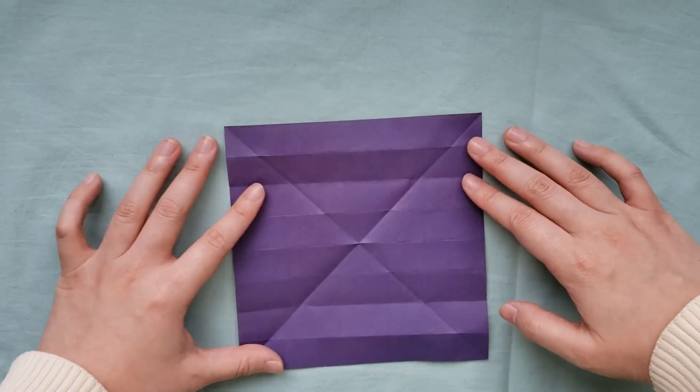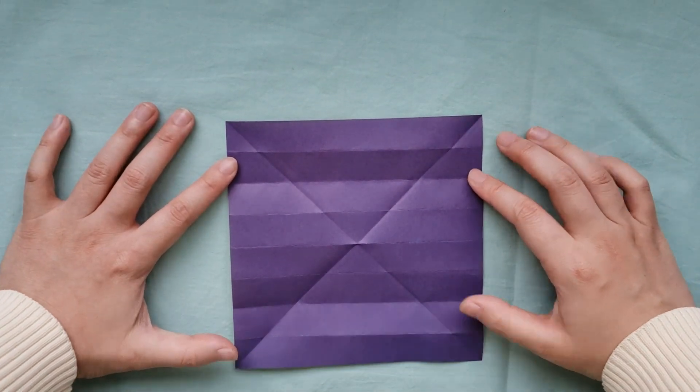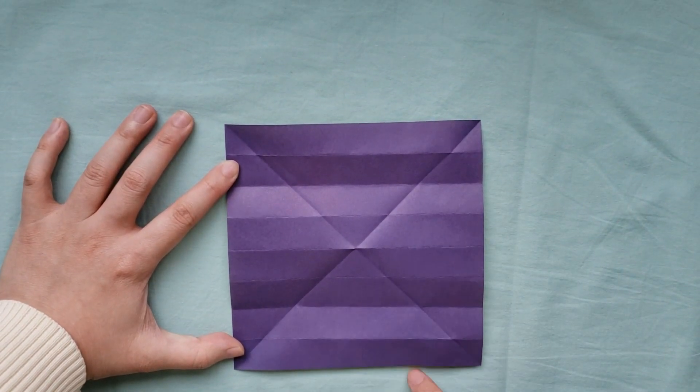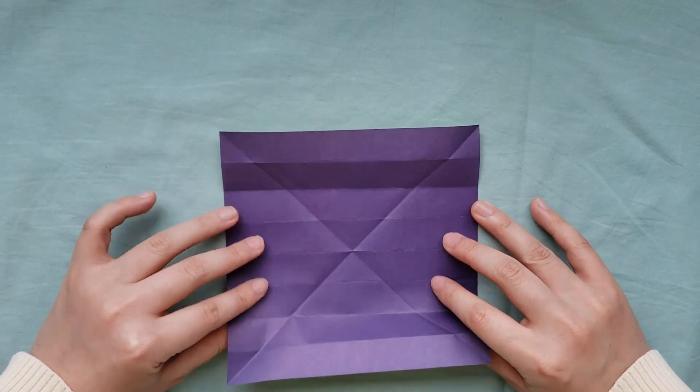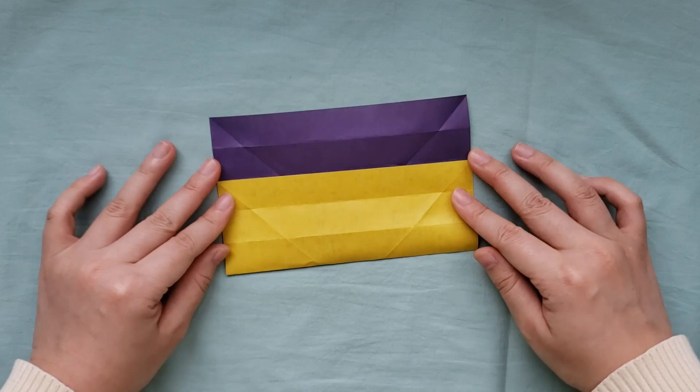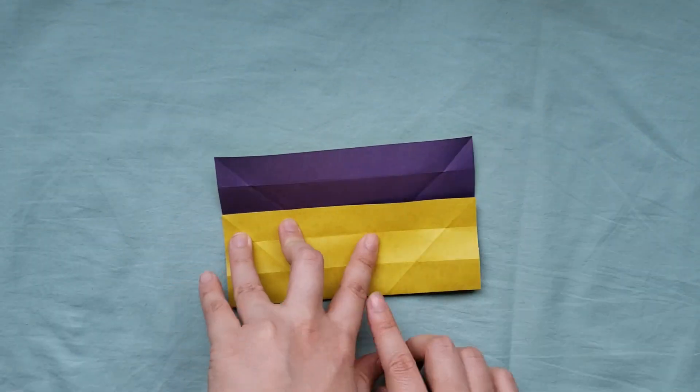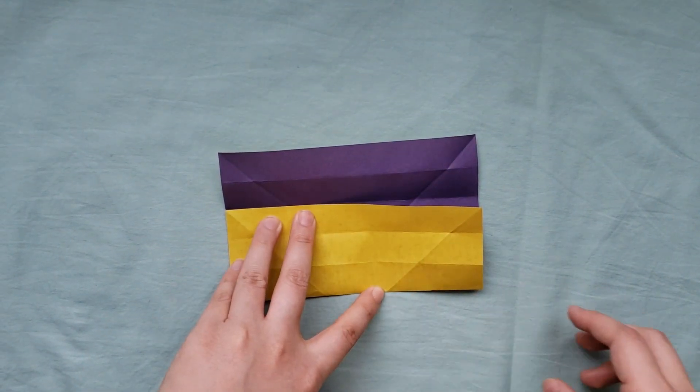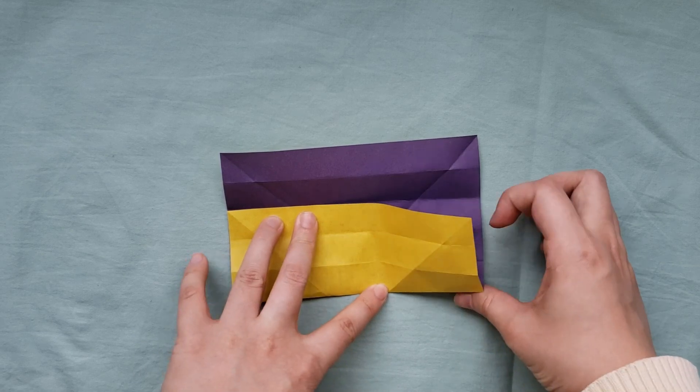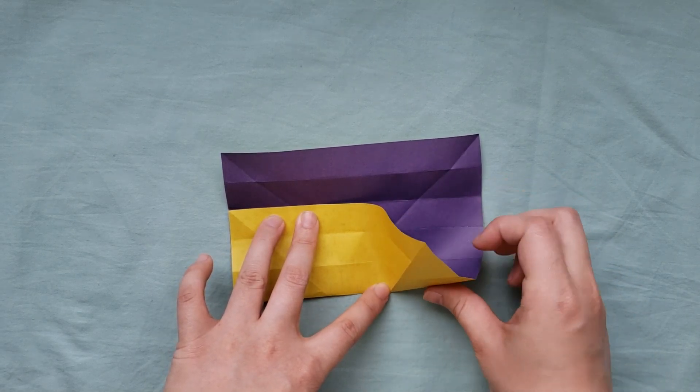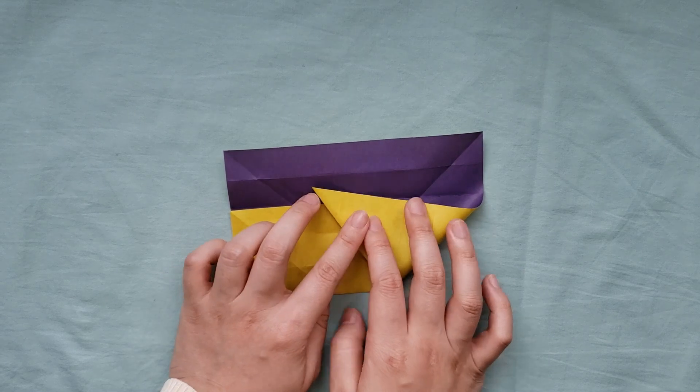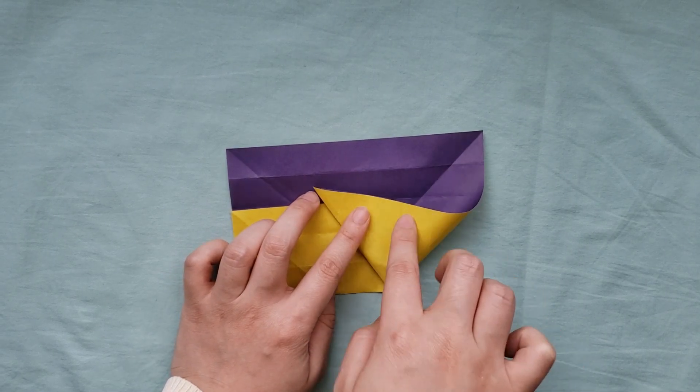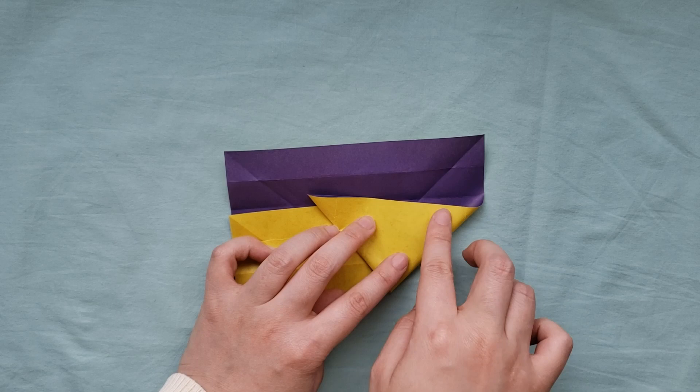Rotate until the creases are horizontal and fold the bottom edge up to the second crease. Put your finger right outside the bottom right diagonal fold and push the bottom right corner in. Fold along the diagonal line until you see five and a half creases and press down.